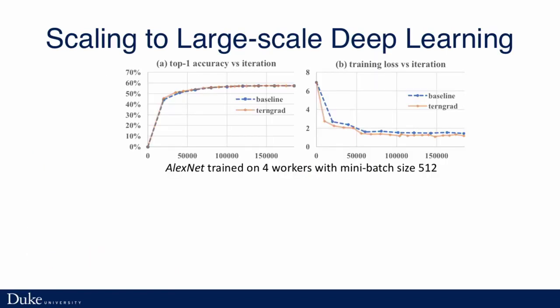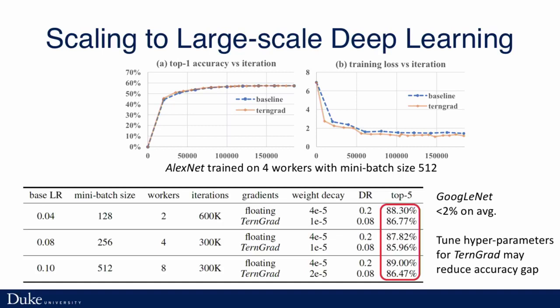Here is the convergence curve of TernGrad compared with the baseline, which is floating gradient descent. For both top-1 accuracy and training loss, the convergence curves match well with each other. We also did an experiment on GoogleNet. On average, the accuracy loss is less than 2%. All hyperparameters except the weight decay and the dropout ratio are tuned by Google for the floating gradient descent — we just fixed them. If we could also tune those hyperparameters, we should be able to reduce the accuracy difference.